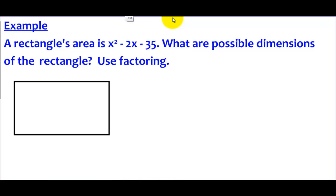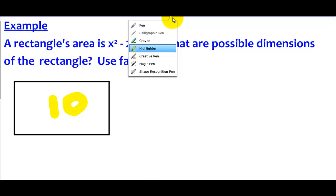So there's my rectangle, and what they're telling us is that the area is something, and they're telling us an expression here. So let's take a simpler example. If I said the rectangle's area was 10, and I wanted to know possible dimensions for the rectangle, what you would end up doing is you would factor 10.